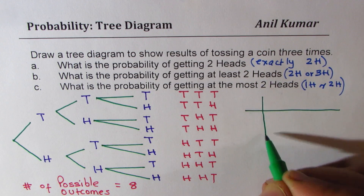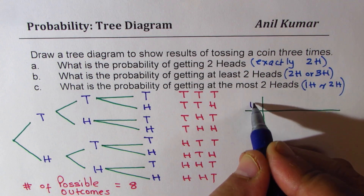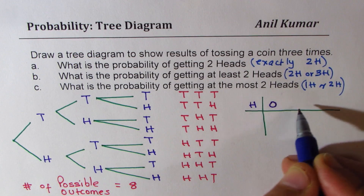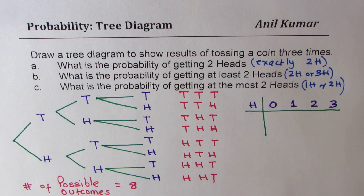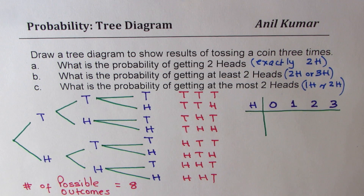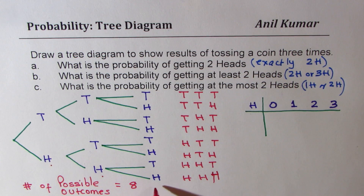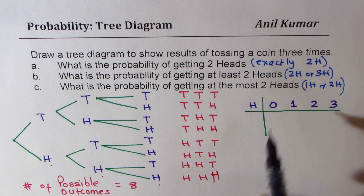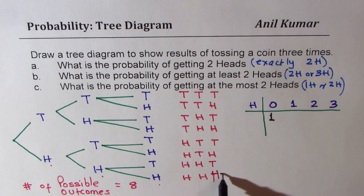Let us say we want to find how many heads. Heads could be either no head, one head, two heads, or three heads. For no heads at all — the last branch was all heads: head, head, and head. So for no heads it is one combination, which is all tails. And for three heads — all heads — there is also just one combination.